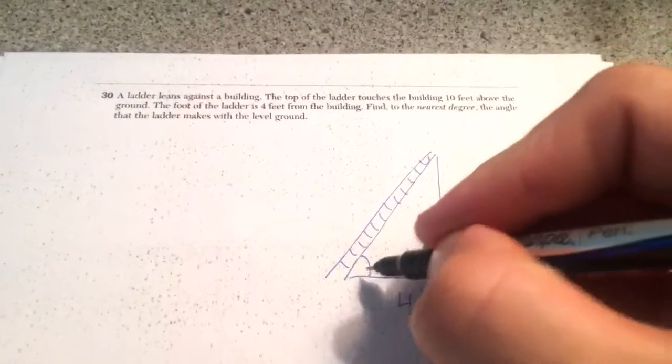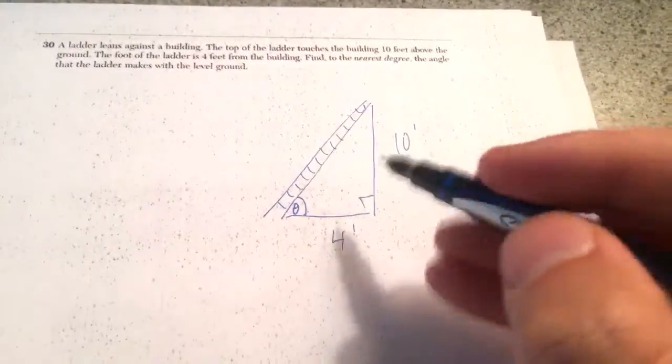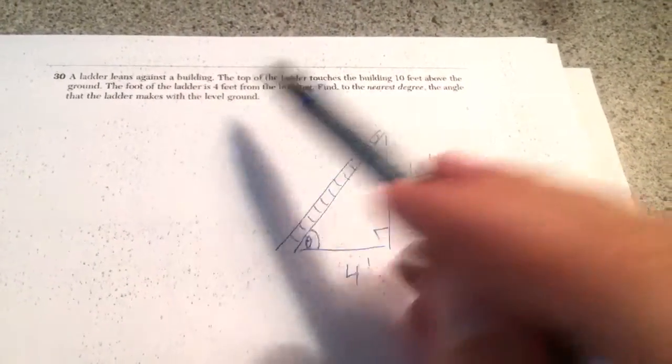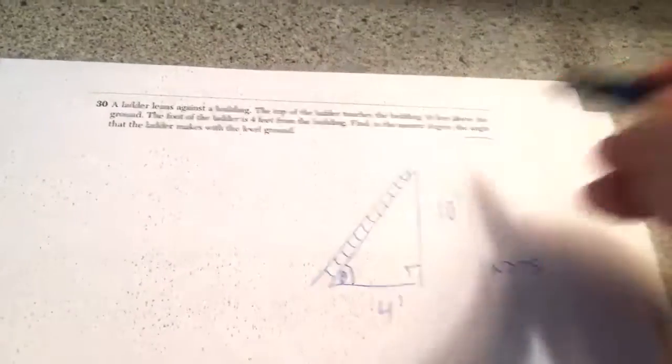So to find this angle, we're going to use tangent because I have an opposite and an adjacent. They do not ask for the measure of the ladder. They ask for the angle.